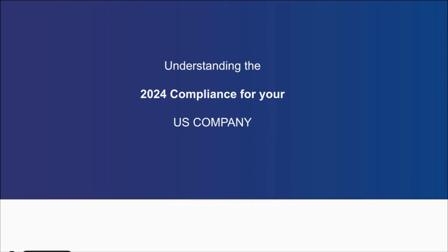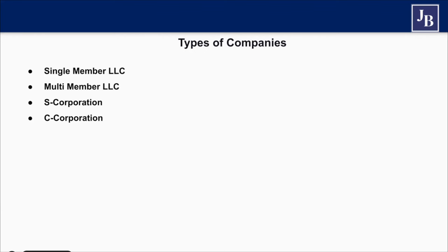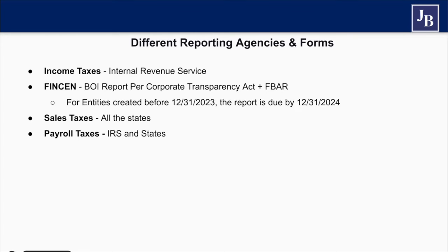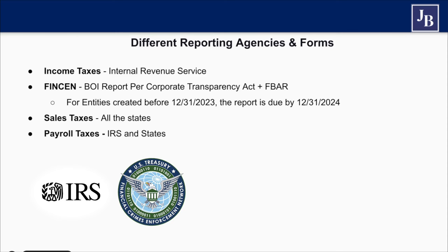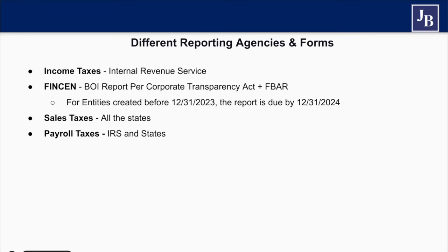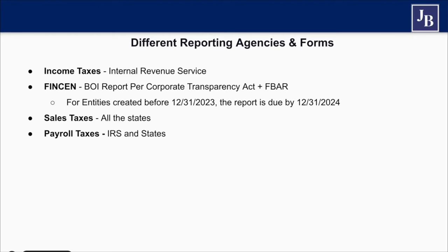Let me get to this presentation and share my screen. Here we have 'Understanding the 2024 Compliance for your US company or yourself.' There are different types of companies: single member LLC, multi-member LLC, S corporations, C corporations, foreign corporations, and individuals. The agencies and forms we cover include income taxes going to the IRS, FinCEN for anti-money laundering — that's the new BOI report — sales taxes which are generally state taxes like a VAT on products shipped into states, and payroll taxes which apply to some people.